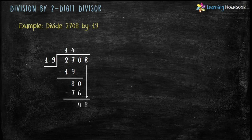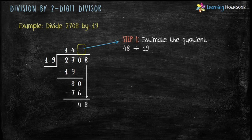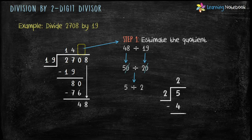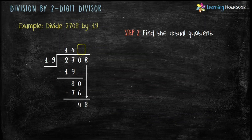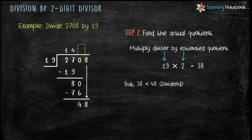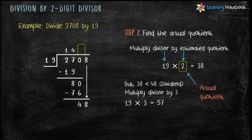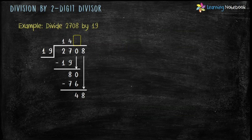Copy the next digit 8. We now have to estimate the quotient for 48 divided by 19. 48 is rounded off to 50, and 19 is rounded off to 20. Cancel 0 by 0 and we get 5 divided by 2. On dividing we get 2 as the estimated quotient. Now let's find the actual quotient. 19 into 2 equals 38. But 38 is less than 48. So we multiply the divisor by 3. 19 into 3 equals 57. But 57 is greater than 48. So 2 is the actual quotient. 19 into 2 equals 38, and 48 minus 38 equals 10.